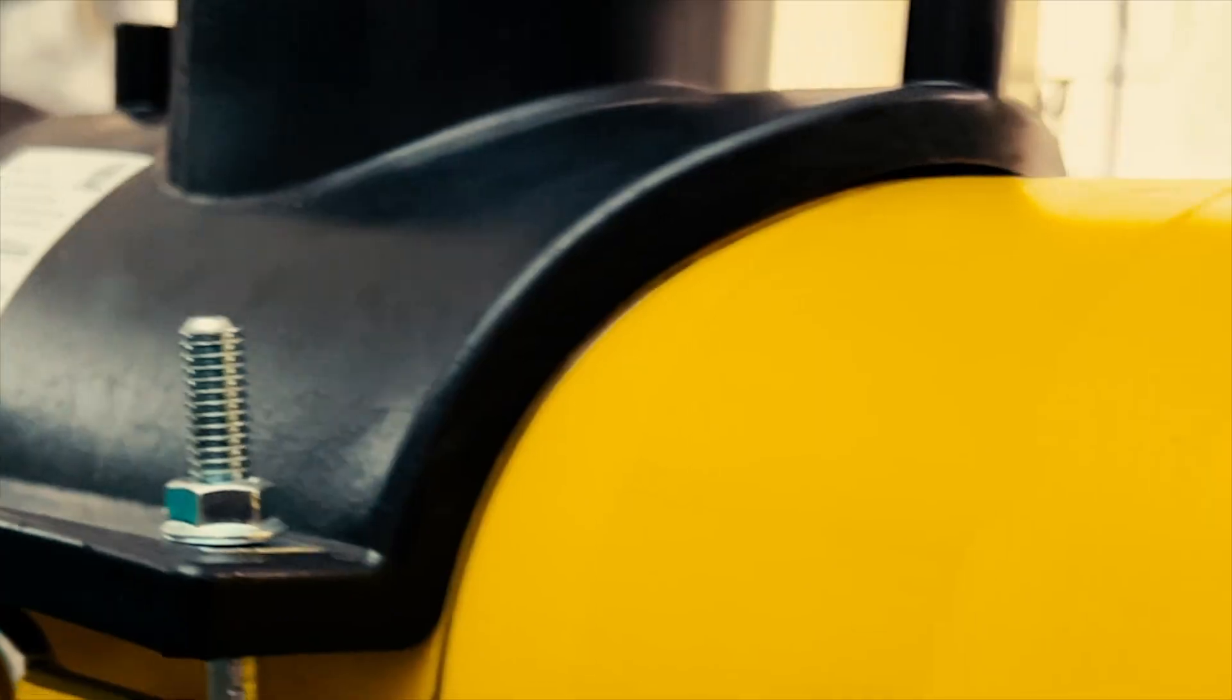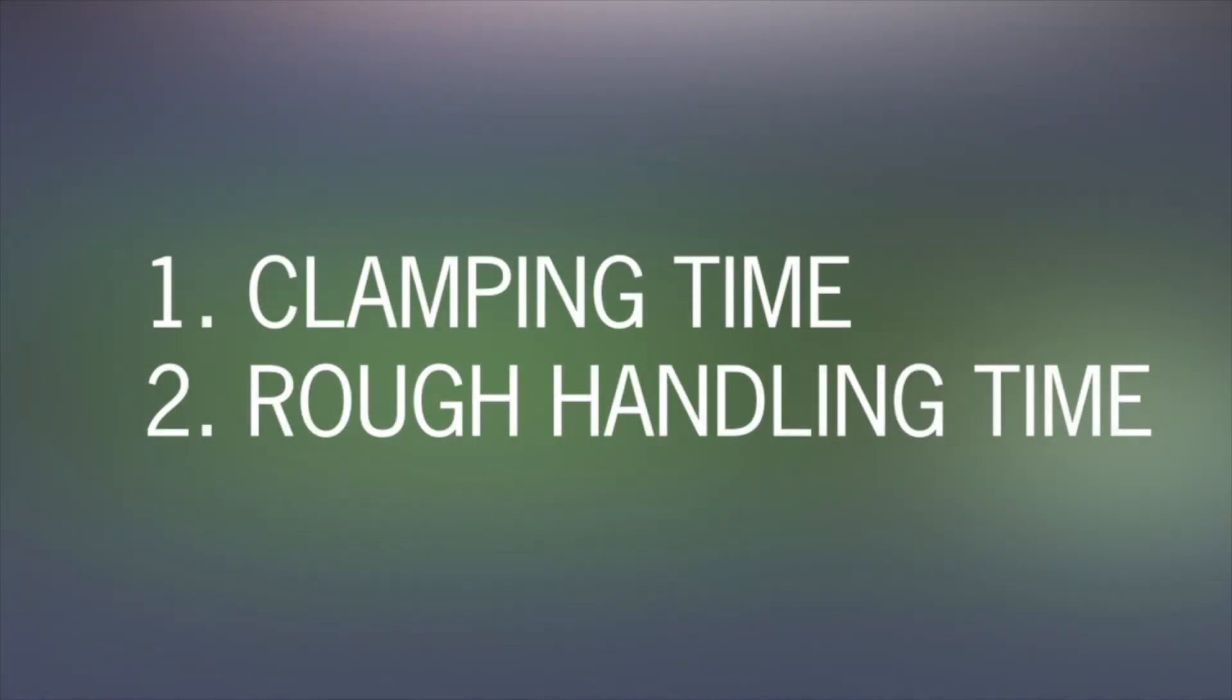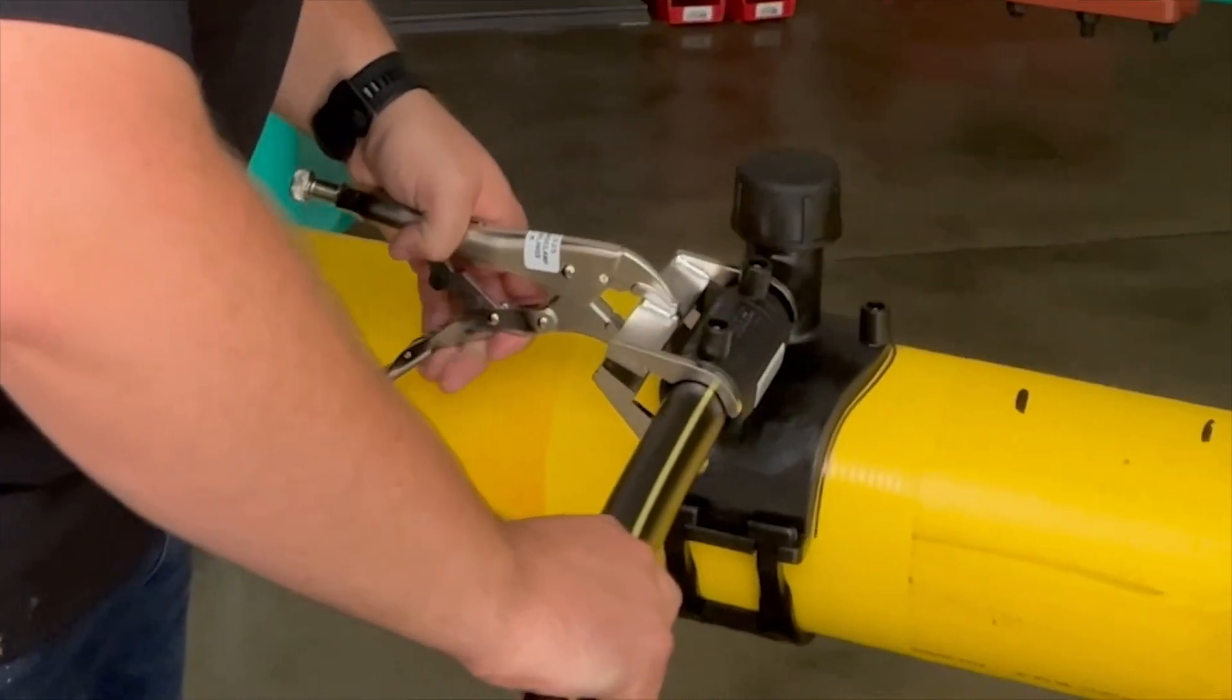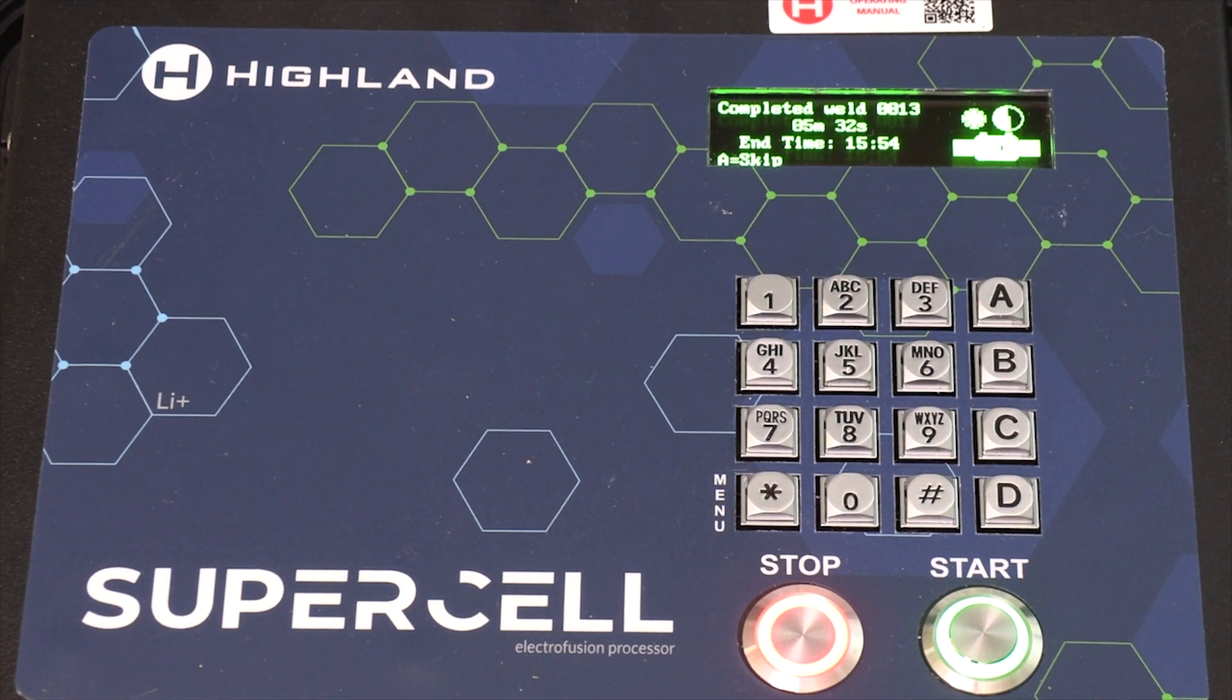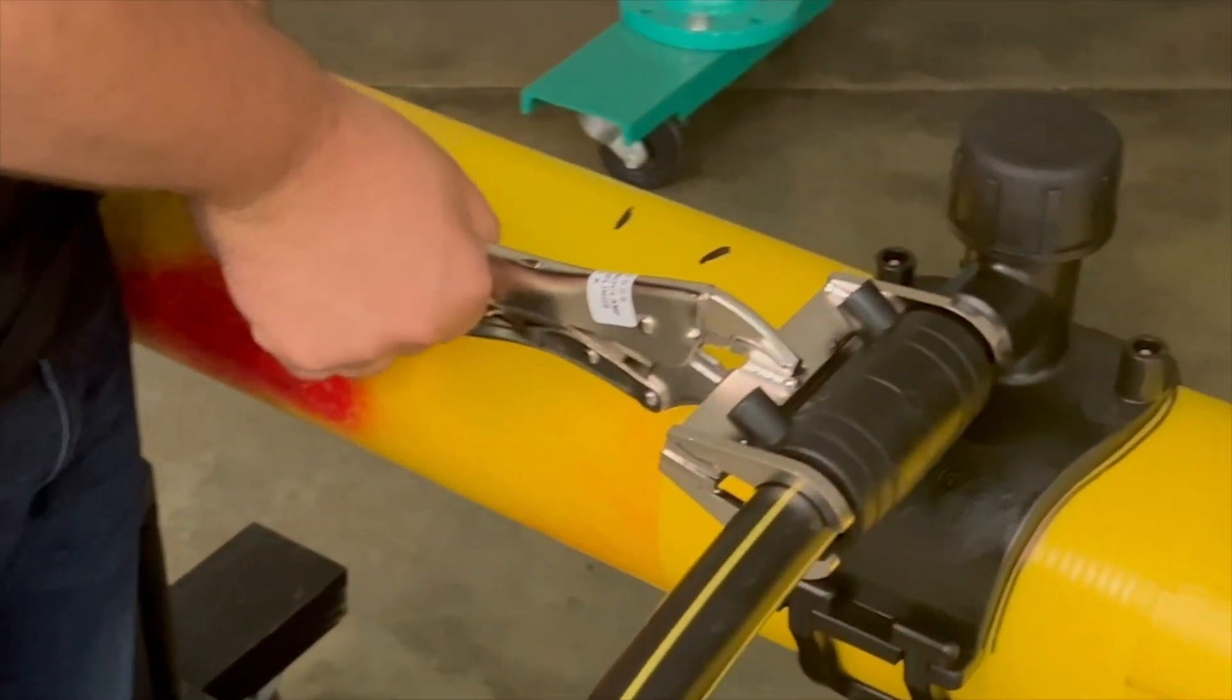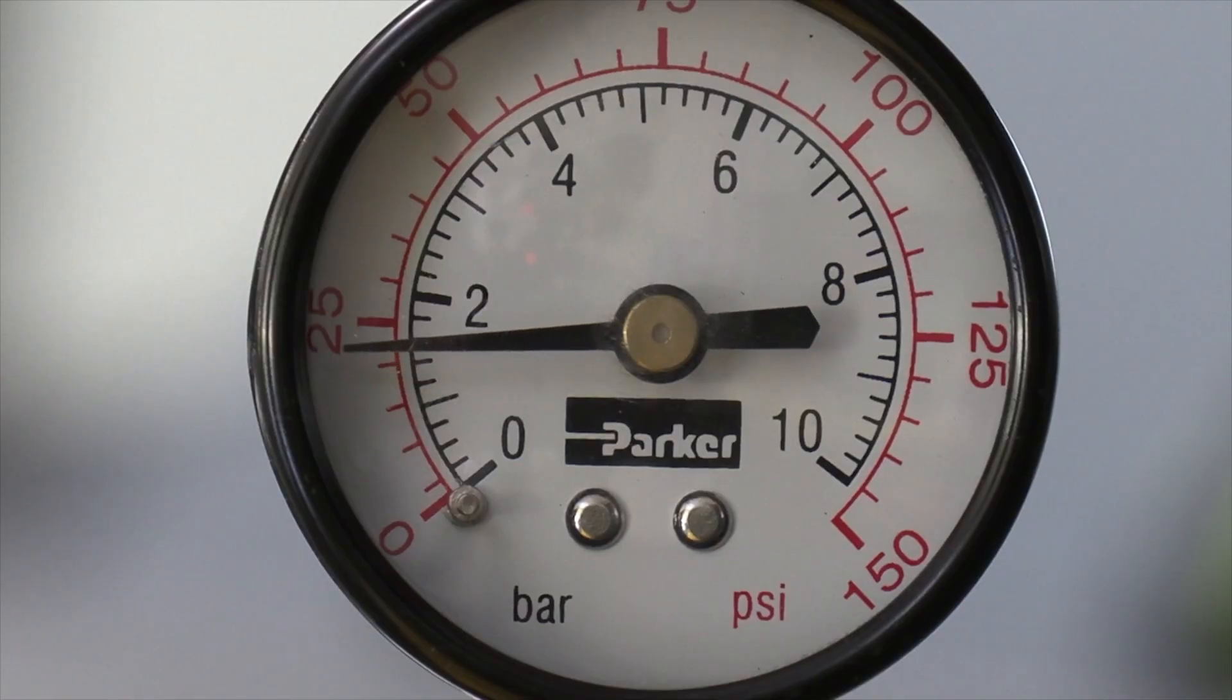Cooling any electrofusion fitting is a two-stage process starting with clamping time followed by rough handling time. Clamping time is listed on the fitting and is usually displayed by the processor. After clamping time is completed, the clamp can be removed from the fitting. Rough handling time is always longer and must elapse before performing pressure tests, tapping, backfilling, etc.